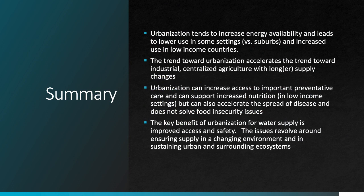To wrap up: urbanization tends to increase energy availability in low- and middle-income countries, and it does lead to lower energy use in some settings, particularly in comparison to suburban development in higher-income settings like the United States. With food supply, the trend toward urbanization also accelerates the trend toward industrial, centralized agriculture with longer supply chains. For health and nutrition, urbanization has benefits in terms of access to food, but also drawbacks in terms of the potential spread of disease and persistent issues with food insecurity associated with economic inequality common in many urban settings. Lastly, urban water supplies can be a major improvement over less reliable rural supplies, especially in low-income settings, but there is a long way to go to manage urban water in a way that preserves both the urban and surrounding ecosystems and water access and safety in a changing climate.